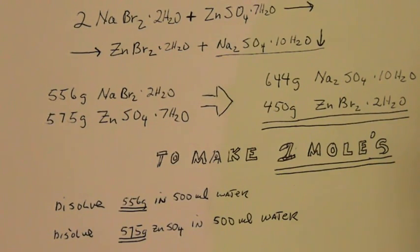To make two moles of zinc bromide, you mix 556 grams of sodium bromide with 575 grams of zinc sulfate.